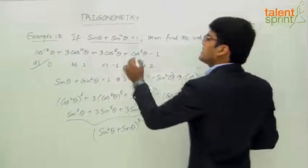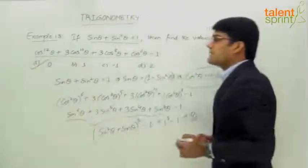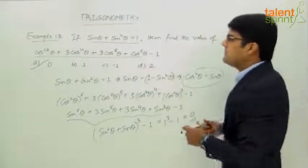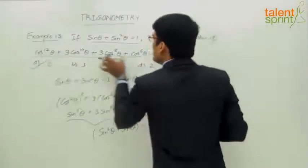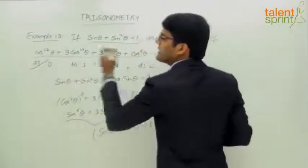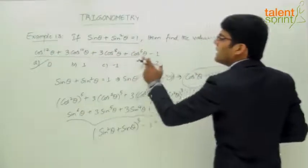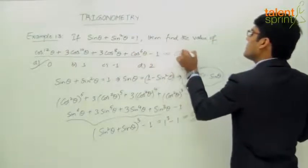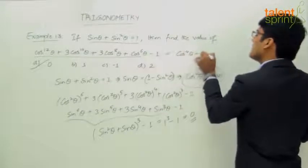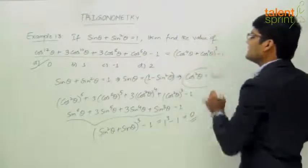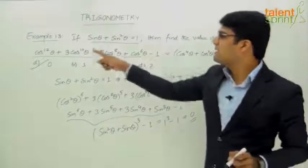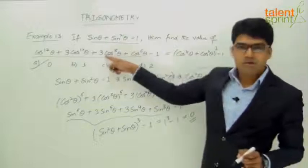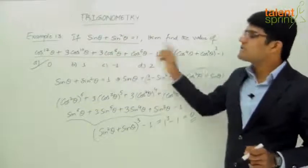In fact, this expression itself can be expressed in the form of (a + b)³. If you take a³ as cos¹²θ and b³ as cos⁶θ, then a = cos⁴θ and b = cos²θ. So the expression is (cos⁴θ + cos²θ)³ - 1, where cos¹²θ is a³, 3cos¹⁰θ is 3a²b, 3cos⁸θ is 3ab², and cos⁶θ is b³.